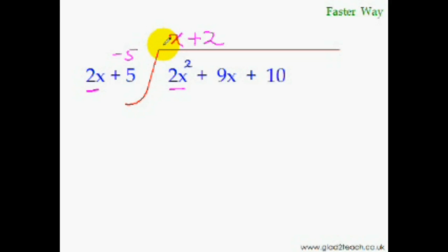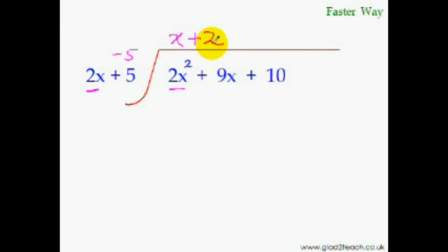See how quickly and easily we can do algebraic division now. To find the remainder, carry on with the process: minus 5 times 2 is minus 10, and minus 10 plus 10 is 0, so the remainder is 0.